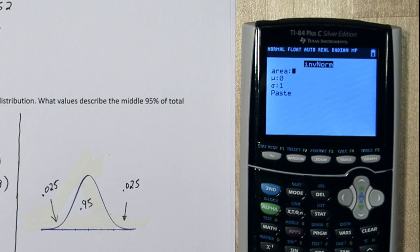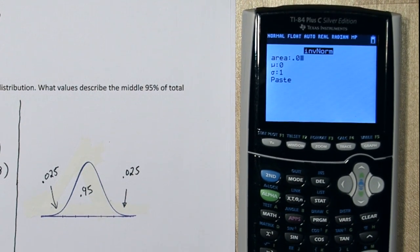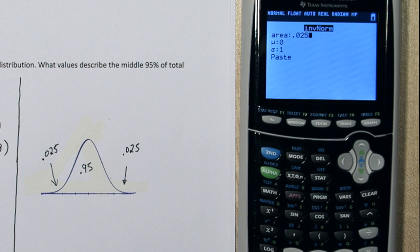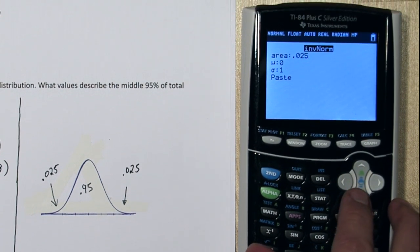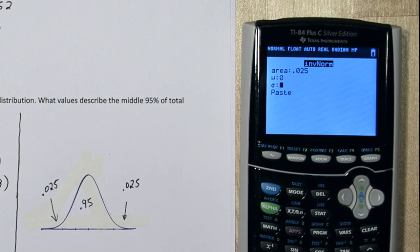And it says what area do you want? I'm going to type in .025. Because that's how much area is in the left tail. So I want what cuts off the lower 2.5% of the area. I'm going to leave the mean and standard deviation as 0 and 1 for the standard normal curve. And it returns this value that's really close to 2.